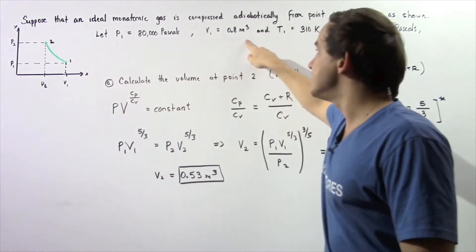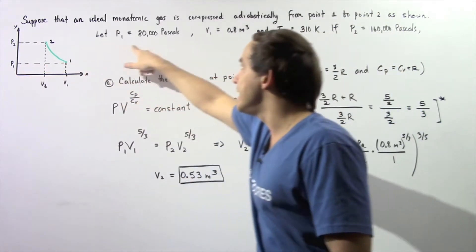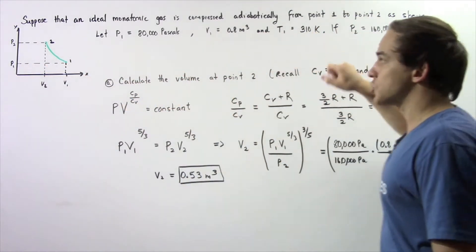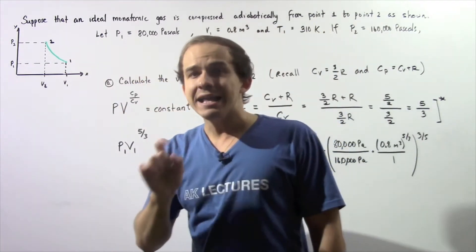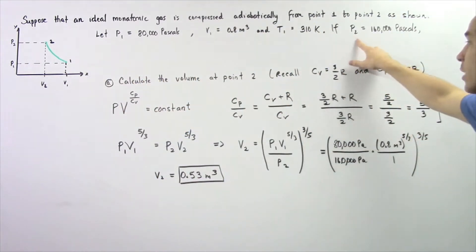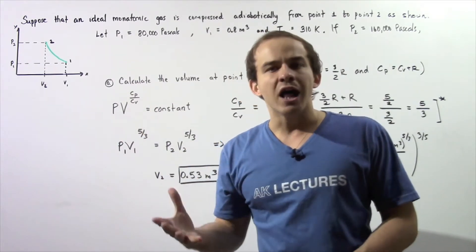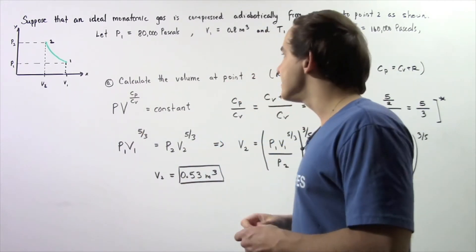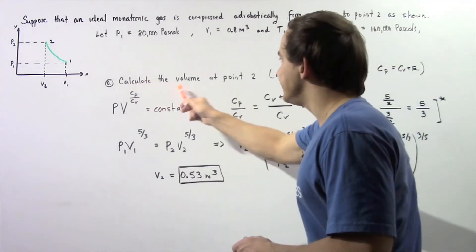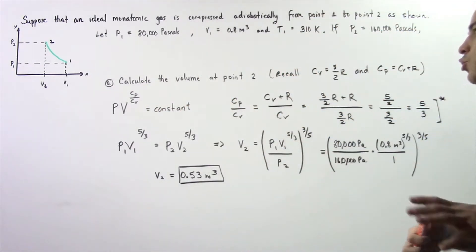If we know what V1 is, and we know what P1 is, and we know the temperature at point 1, and if we're given the pressure at point 2, let's calculate the volume of our ideal gas at point 2.